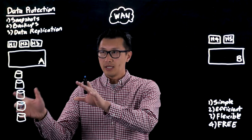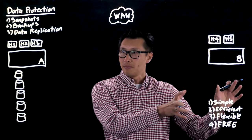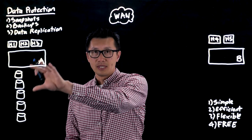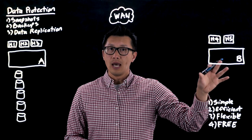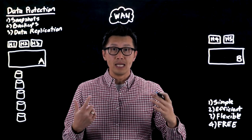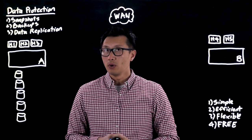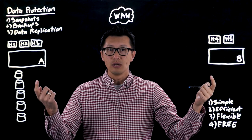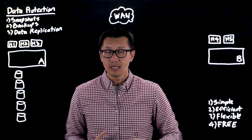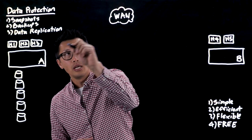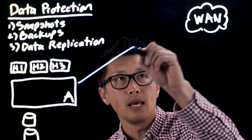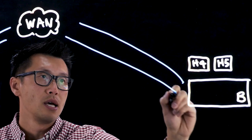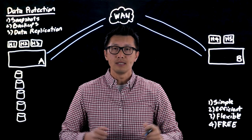We have two sites here — site A and site B — with some hosts and some volumes. We'll replicate from site A to site B. This is just one example, but there are many topologies that we can support. The first thing to do is connect the two arrays over the WAN since they're at two different sites. Here we'll connect site A and site B into the WAN, and once they can ping and see each other, we can establish a relationship for replication.